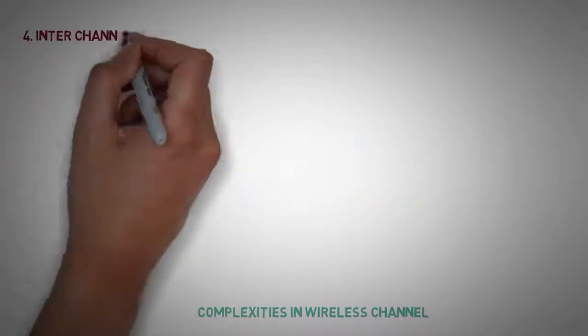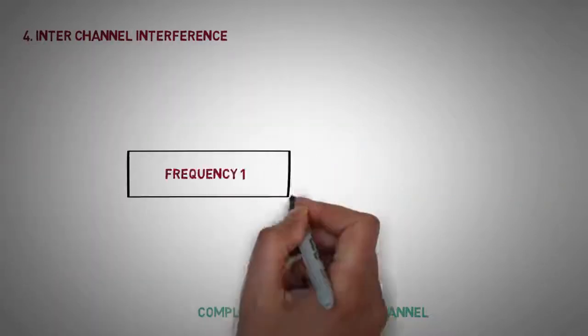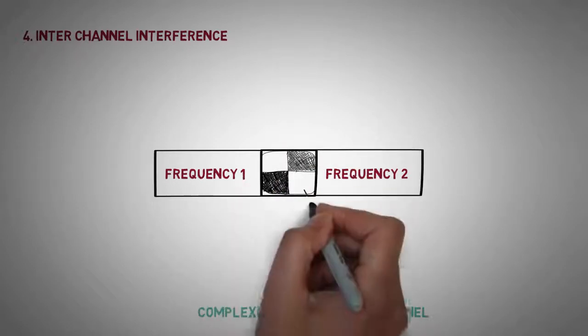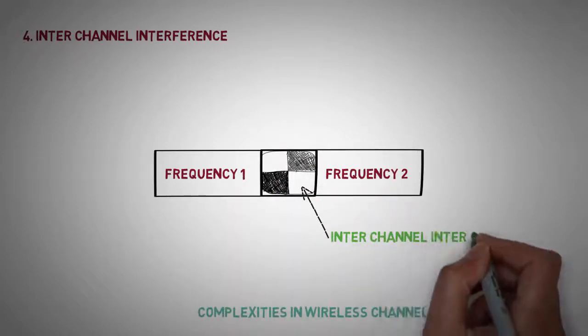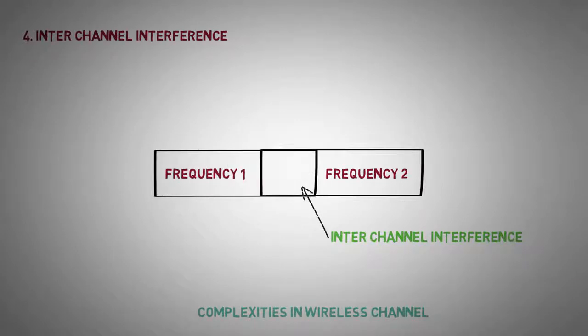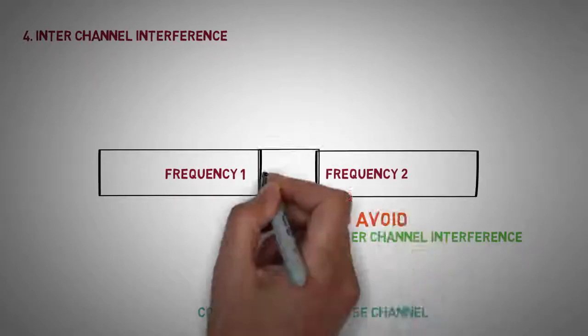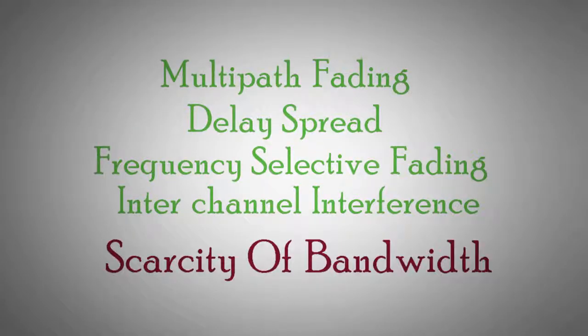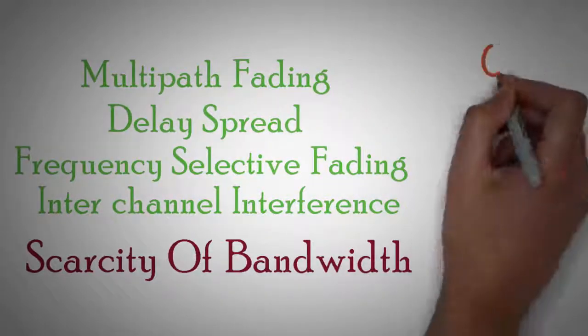Inter-channel interference. Often signal bandwidth of adjacent carrier frequencies overlap with each other, giving rise to inter-channel interference. Guard bands were introduced to avoid inter-channel interference. All these limitations compounded with the scarcity of bandwidth gave rise to multiple access technique.